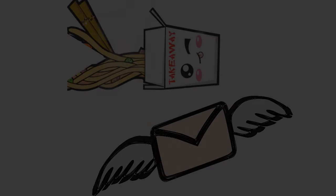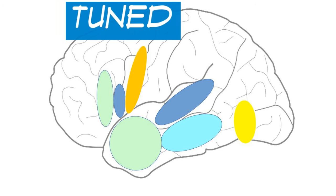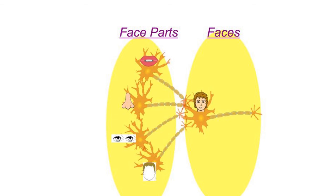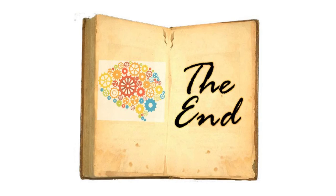To summarize, the take-home message of this segment is that neurons and cortical areas are tuned to represent particular types of things, such as faces and face parts. In the upcoming videos, we will look at the tuning of other cortical areas. This concludes our introduction to the basics.